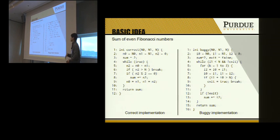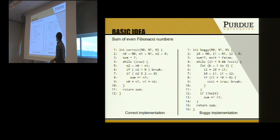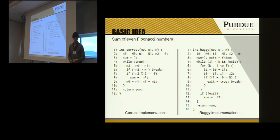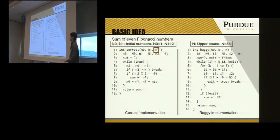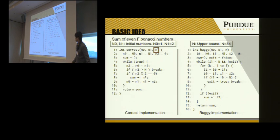Now I'll present the basic idea with an example. Here are two implementations of summing even Fibonacci numbers. The program takes three inputs: the first two are the initial Fibonacci numbers, which are one and two, and the last parameter is an upper bound. If the Fibonacci number exceeds the upper bound the program will stop.